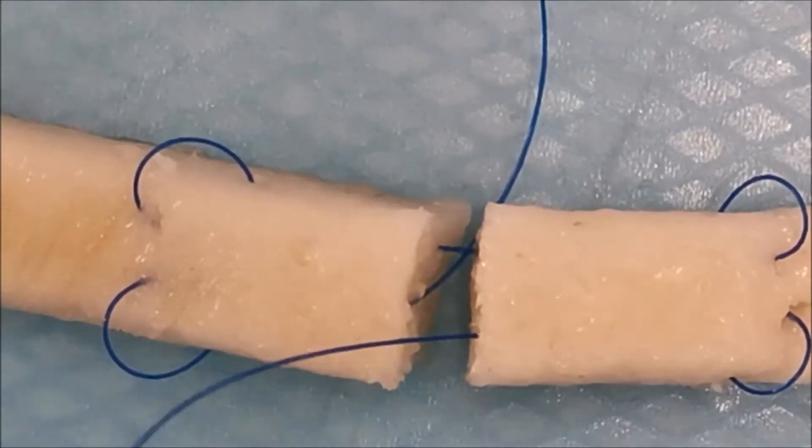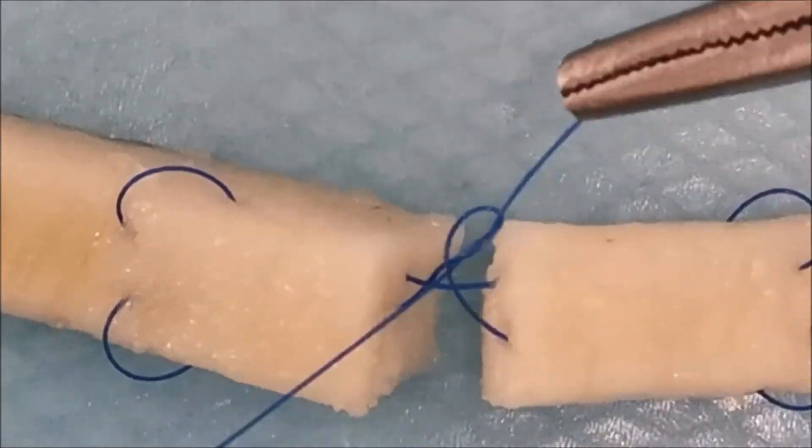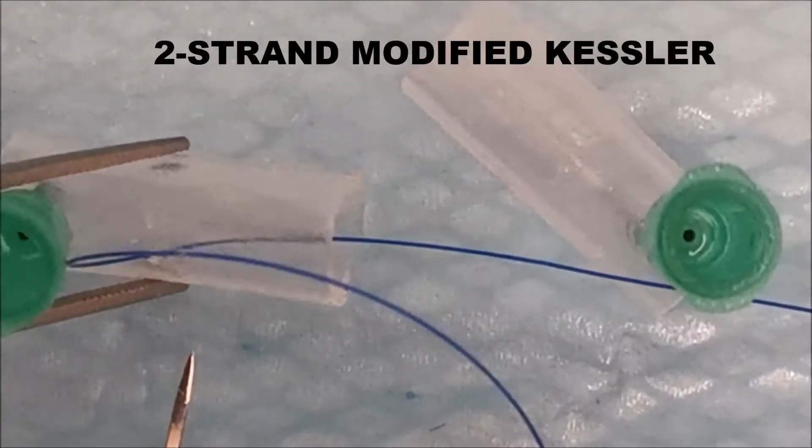Once all four grasping loops are done, you'll see two strands going across the site and the knot is tied.